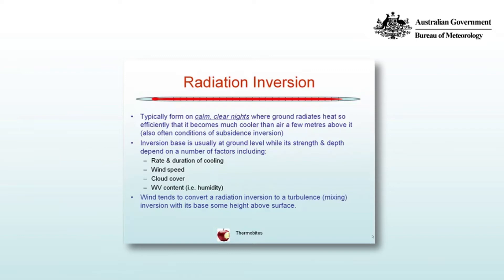Cloud cover and water vapor act to absorb infrared radiation and inhibit the long wave cooling. Again, on nights where there's a subsidence inversion the wind speed is typically low, and if there's not a lot of moisture then the water vapor content is low and there's not much cloud cover.